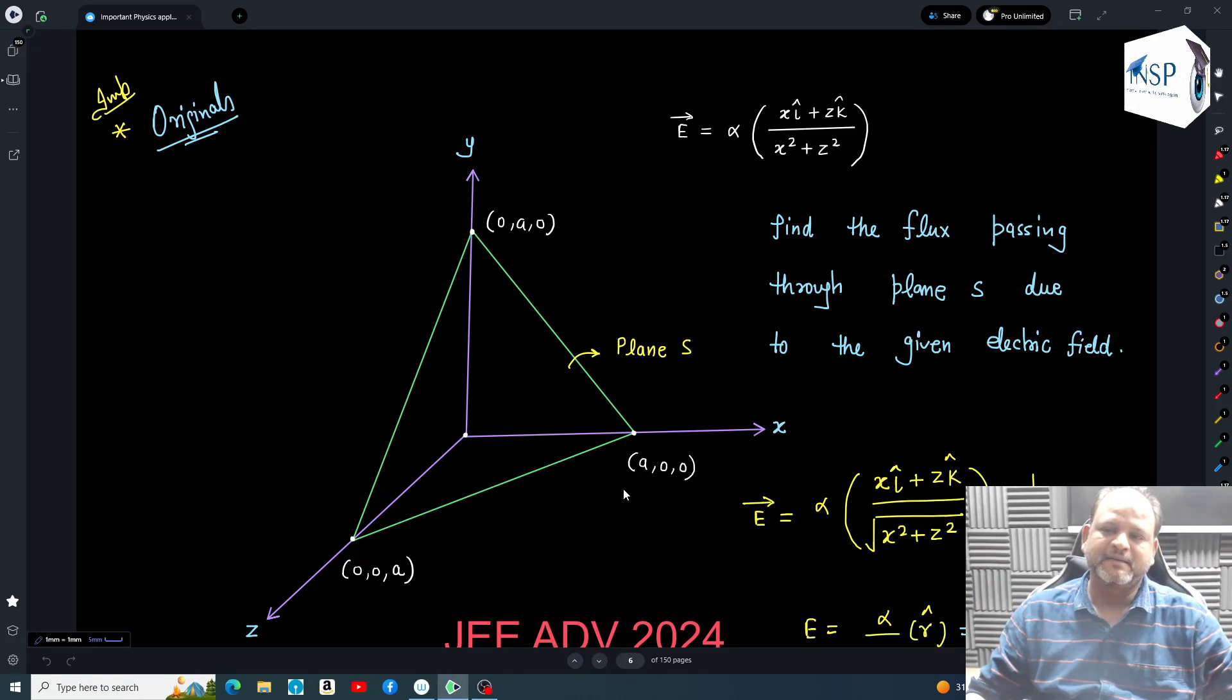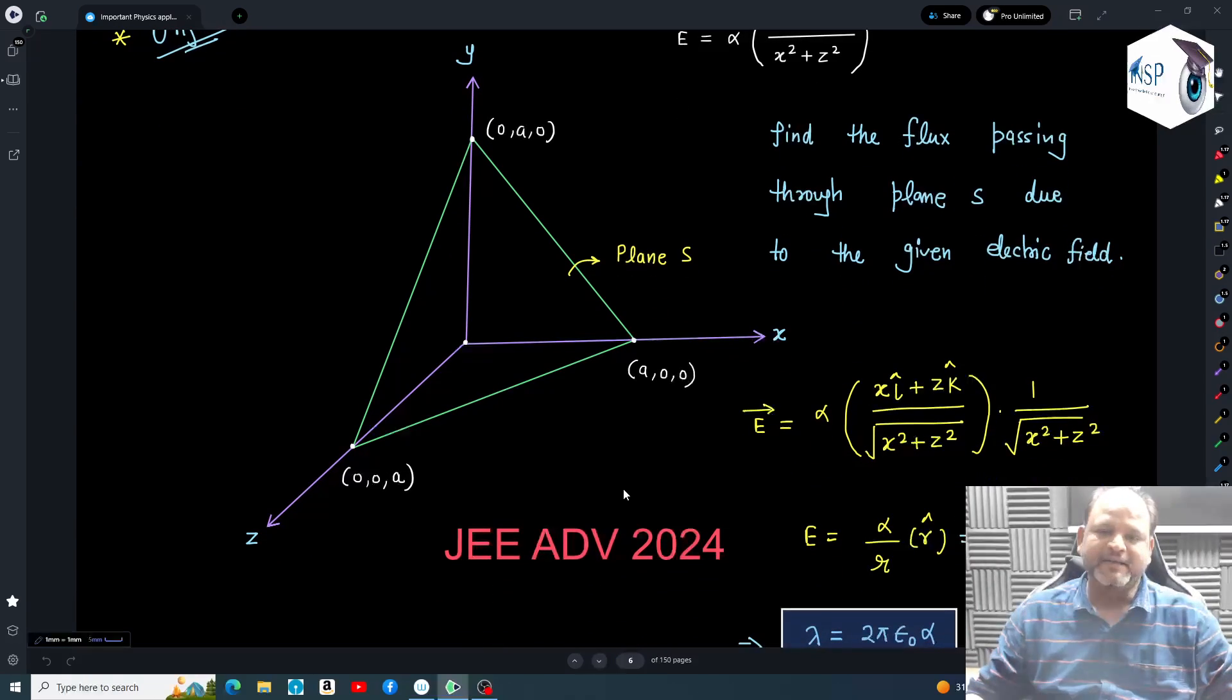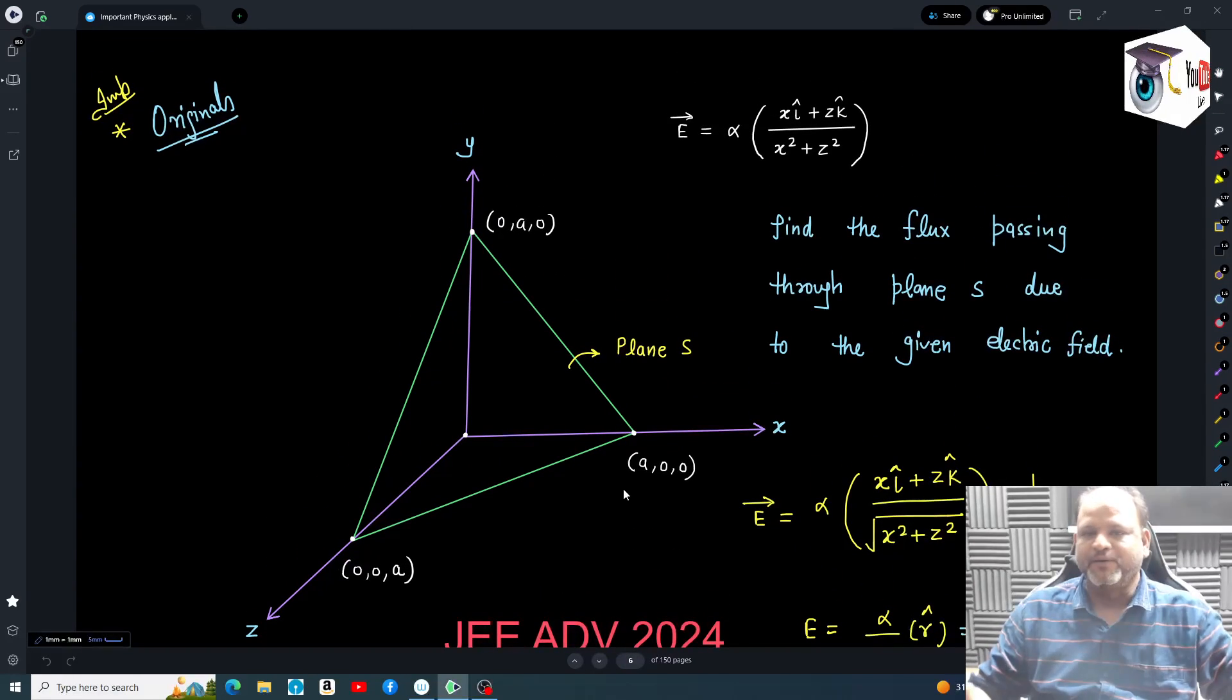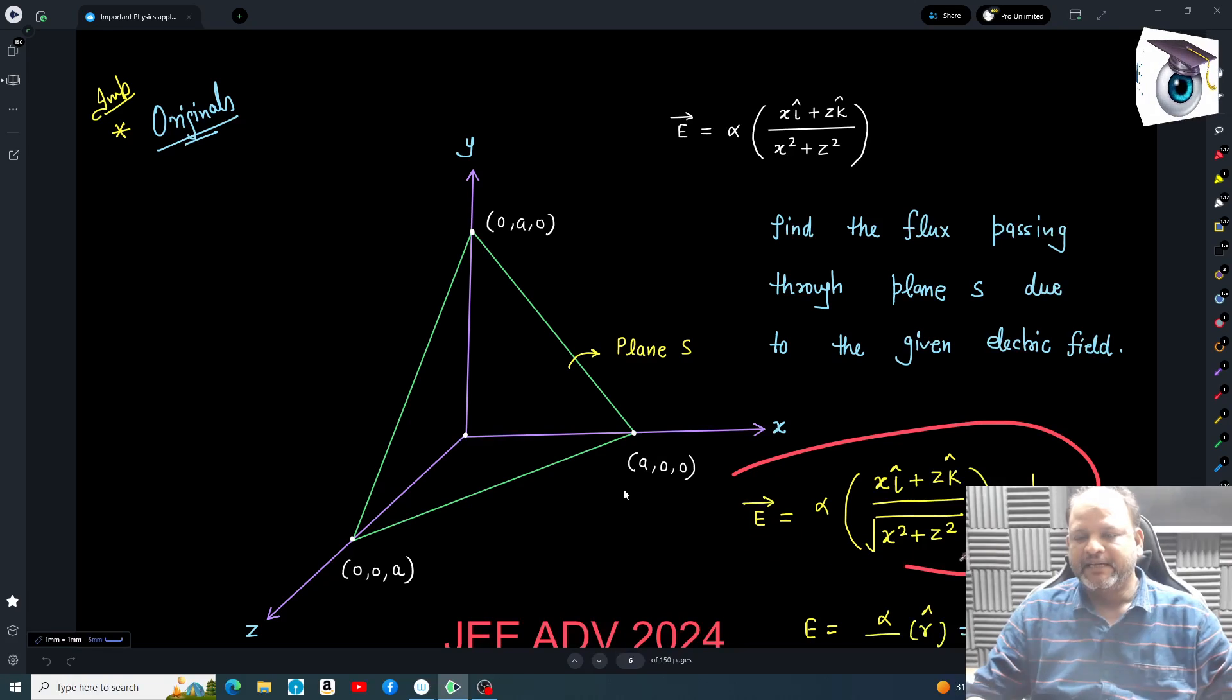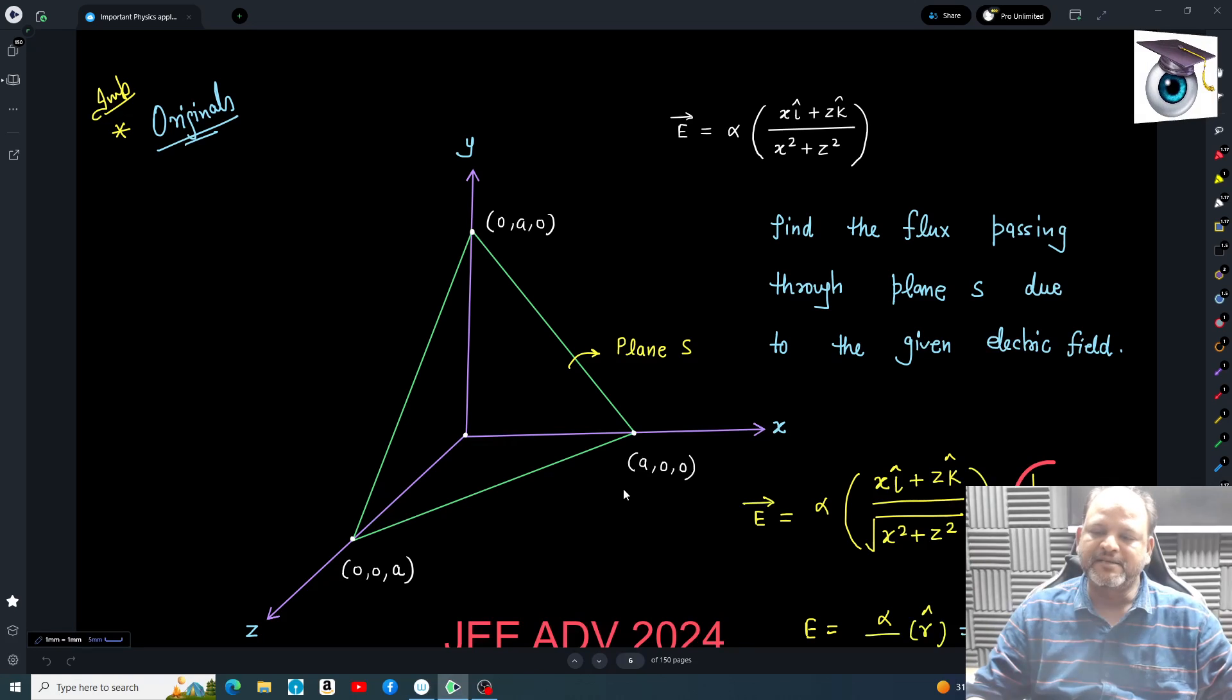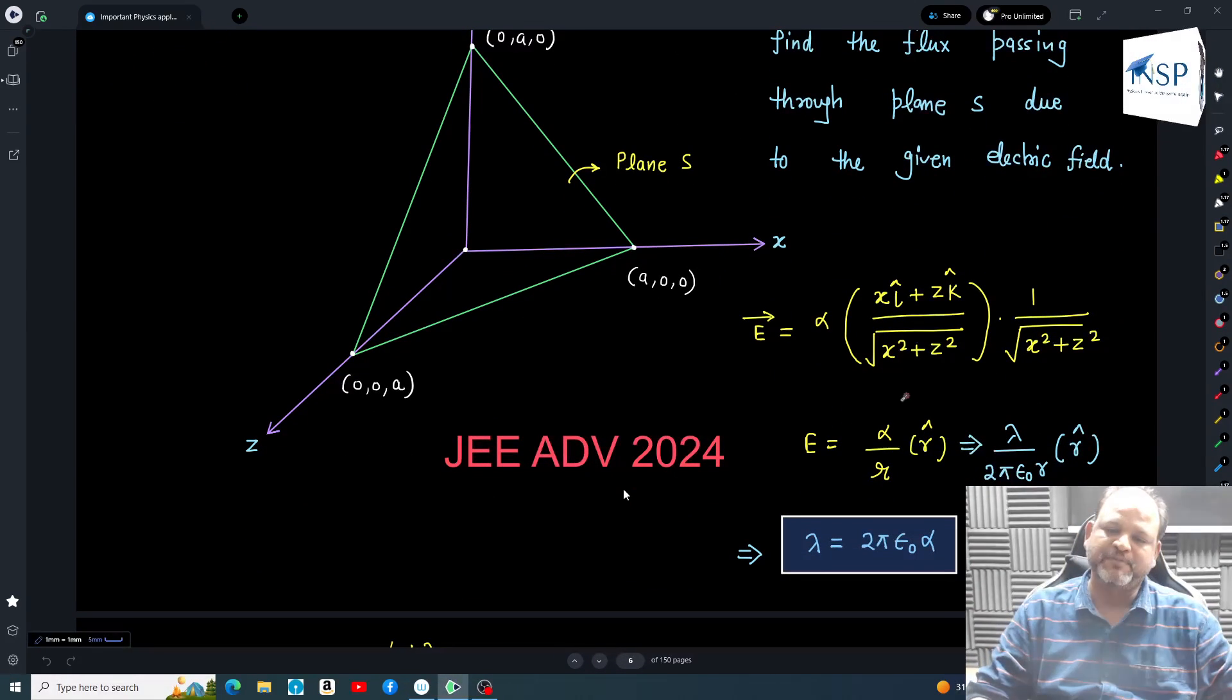I'll discuss how. I'm rearranging this electric field - this is going to be r̂ cap kind of function in xz plane, and this is 1/r. So my electric field expression in polar form becomes α/r times r̂. Then I can substitute that if it is resembling a wire along y-axis, then this is going to be λ/2πε₀. So if I simplify this, I get that lambda of that hypothetical wire as λ = 2πε₀α.